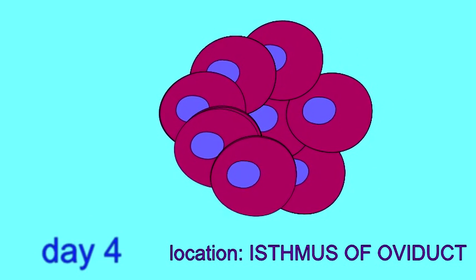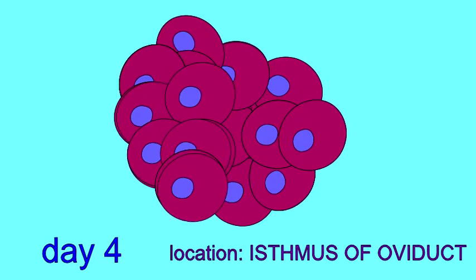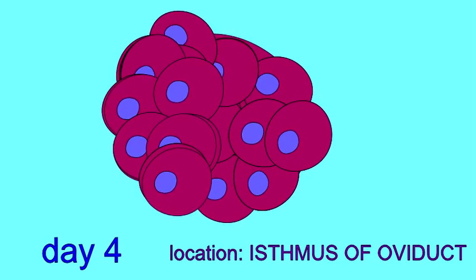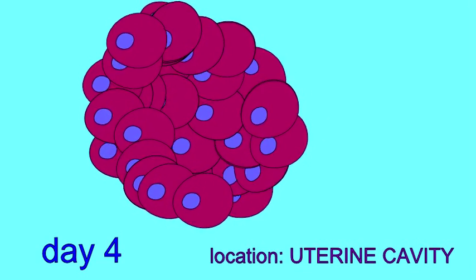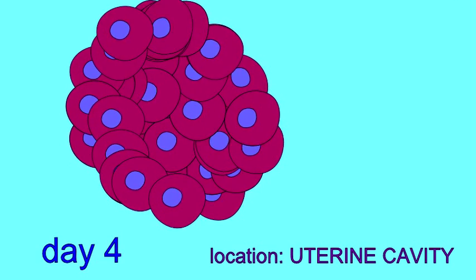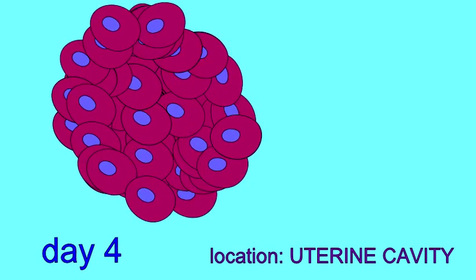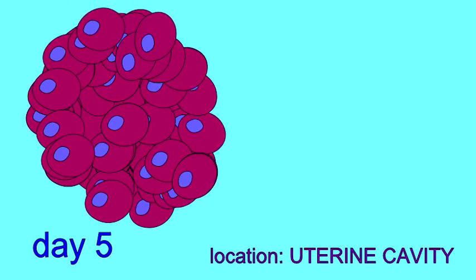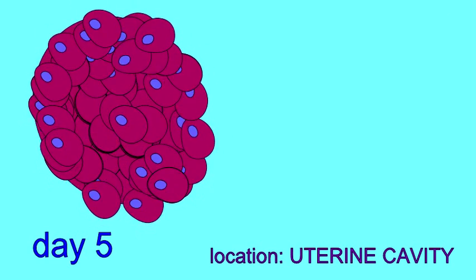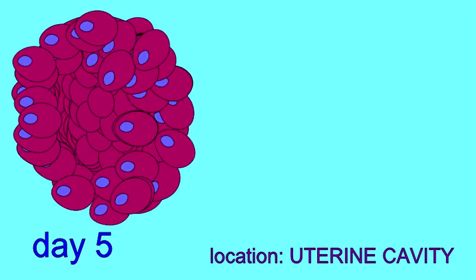The embryo becomes a solid ball of cells known as a morula while traveling through the oviduct. About four days after fertilization, the morula approaches the uterine cavity, and at this point, it becomes a hollow ball of cells known as the blastocyst.